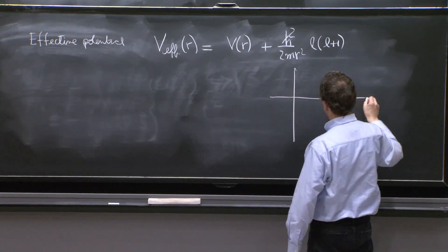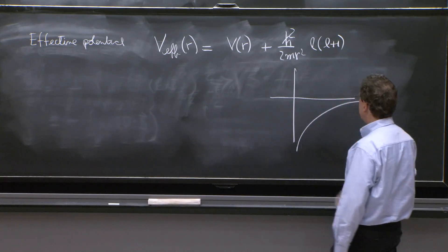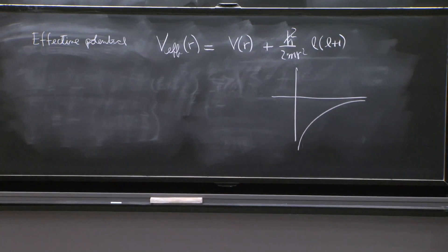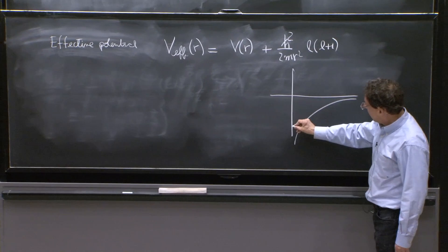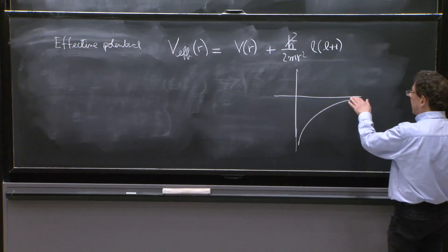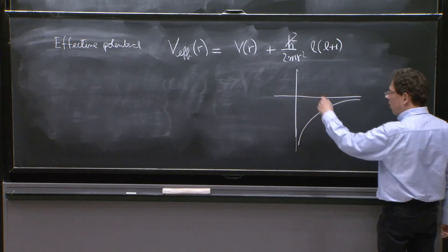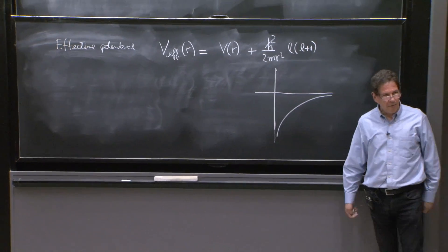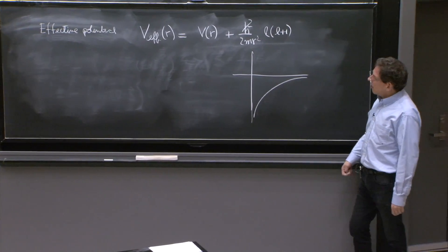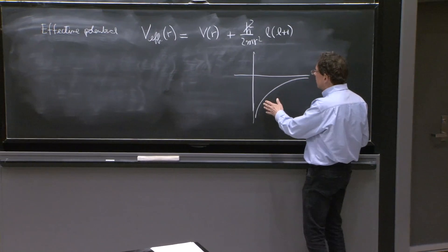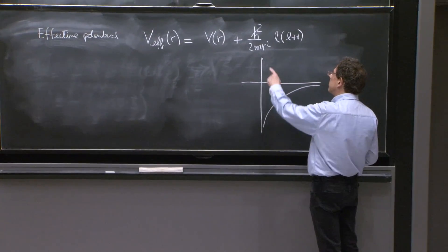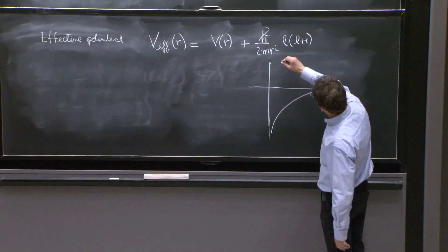So if you have a Coulomb potential that would try to make the electrons go all the way to the proton. So this is attractive. Well, even that is not problematic for l equals 0. But for l different from 0,